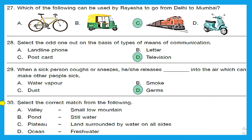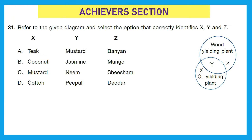Question 30: select the correct match. Valley — small low mountain: incorrect, as a valley is low land between hills. Pond — still water: correct, we got our match. Plateau — land surrounded by water on all sides: wrong, plateau is high flat land; land surrounded by water is an island. Ocean — fresh water: incorrect, ocean is the largest salt water body on earth. So option B, pond is still water, is the correct match.